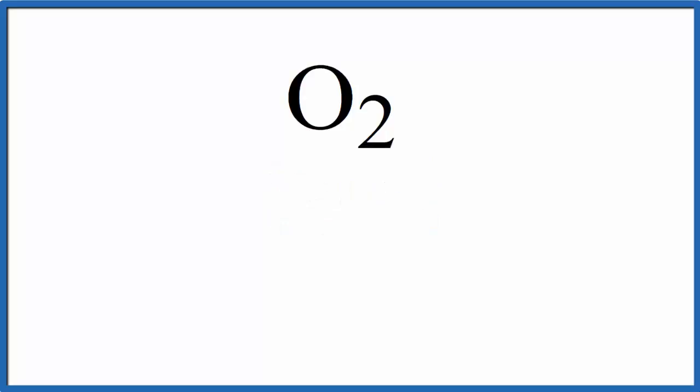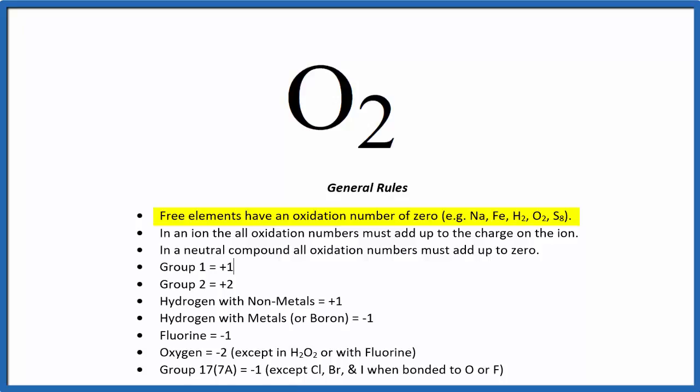When you have uncombined neutral elements, like Na, S, Fe, and so on, they haven't combined yet, so they haven't been oxidized or reduced. For these, we consider the oxidation number to be zero as well.